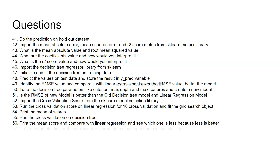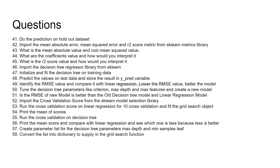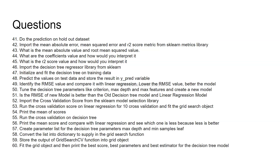Next, create a parameter grid for the decision tree including max_depth and min_samples_leaf — for example, max_depth from 1 to 10 and min_samples_leaf from 1 to 20 — and convert it into a dictionary for the GridSearchCV function. Grid search helps identify the right parameters for your model. Store the output of the GridSearchCV function into a grid object by specifying your parameter grid and model, then fit the grid object.